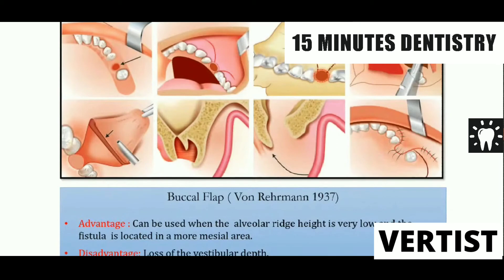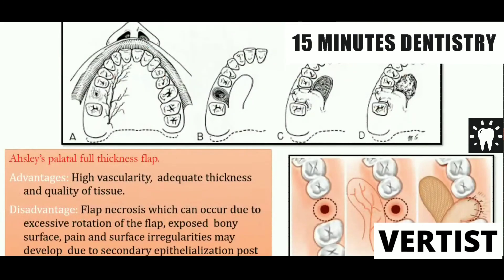The disadvantage of the buccal advancement flap is decreased vestibular depth. However, this flap is very versatile — it is an immediately available flap and easy to harvest. The palatal flap is taken from the palatal side, based on the greater palatal artery — it is highly vascular. The disadvantage is that it leaves a raw area on the palate which is extremely painful, but it is an excellent flap to cover the fistula with good epithelialization.